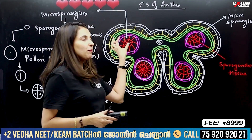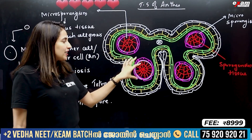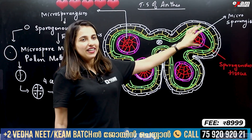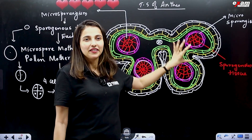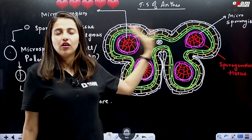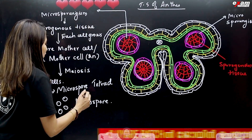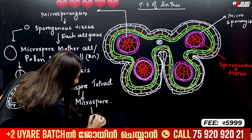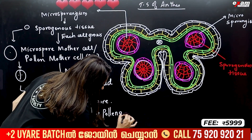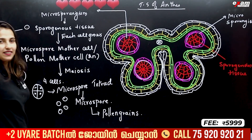Each microspore mother cell gives 4 microspores. If you have 10 cells here, it is 40 microspores. Here it is 360, so it will be 200,000 microspores total. These microspores are mature pollen grains.